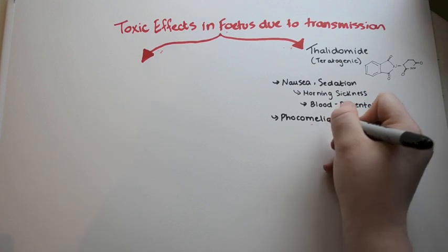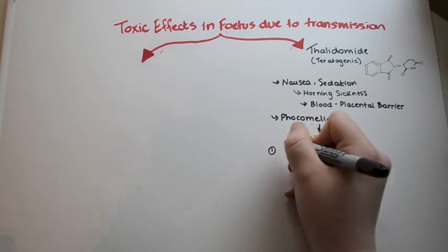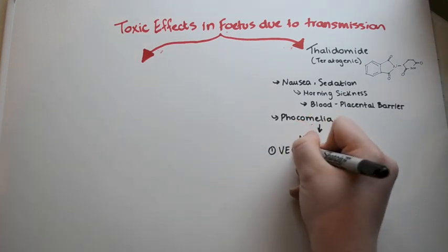The main teratogenic effect caused by Thalidomide is that it causes Phocomelia, which is a malformation of limbs.